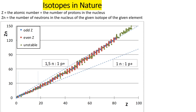Let me come back to the question of the ratio of neutrons to protons. To help the eye, I show a broken line with the ratio of one neutron to one proton, and a second broken line with the ratio of one-and-a-half neutrons to one proton. As you can see, when the atomic number is small — below maybe 20 — the number of neutrons approximately equals the number of protons.